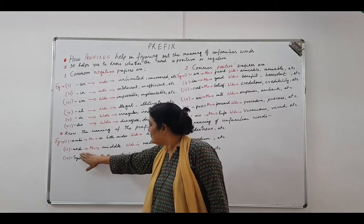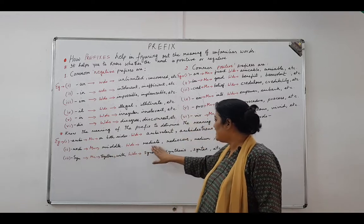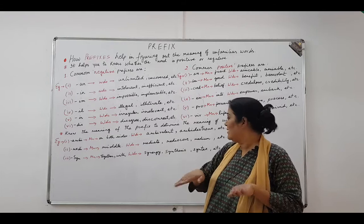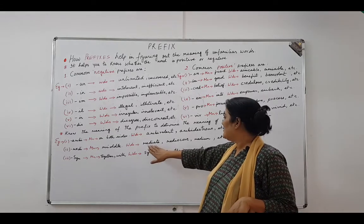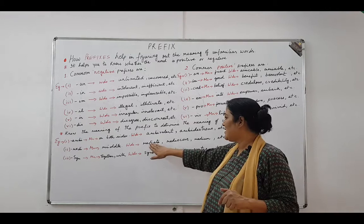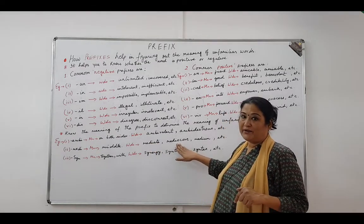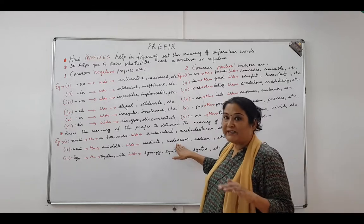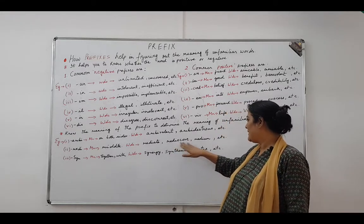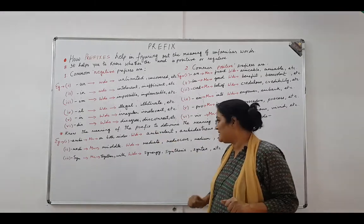The next prefix is 'medi', which means 'middle'. All words from this prefix will not be at either extreme — they will always be in the middle. So 'mediate' refers to a person who intervenes in a conflict to find a solution. 'Mediocre' means of ordinary quality — neither very good nor very bad. 'Medium' is again somewhere in between, not at the extreme ends.